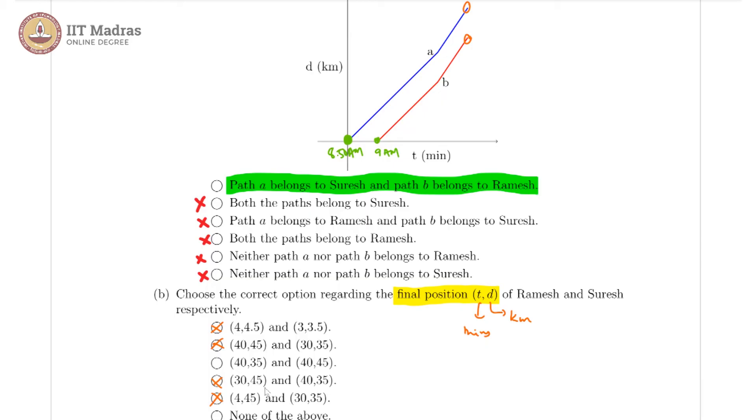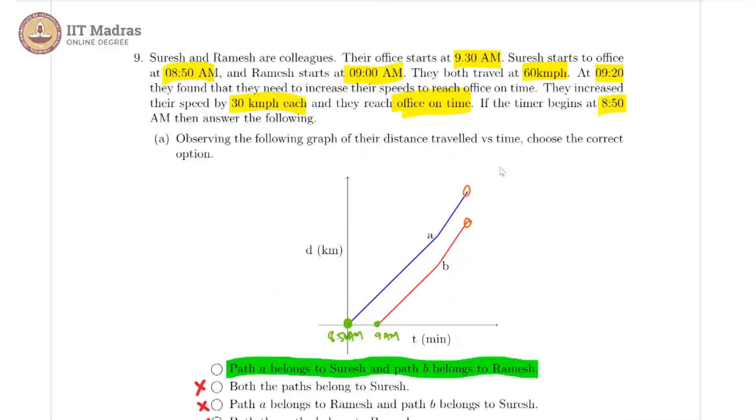In terms of the number of kilometers traveled, Suresh goes at 60 km/h for half an hour till 9:20. So in half an hour he must have covered 30 kilometers and then for 10 minutes he goes at a speed of an additional 30 km/h. So 90 kilometers per hour for 10 minutes. 10 minutes is one-sixth an hour, one-sixth into 90 gives us 15 km. So overall Suresh covered 45 km.